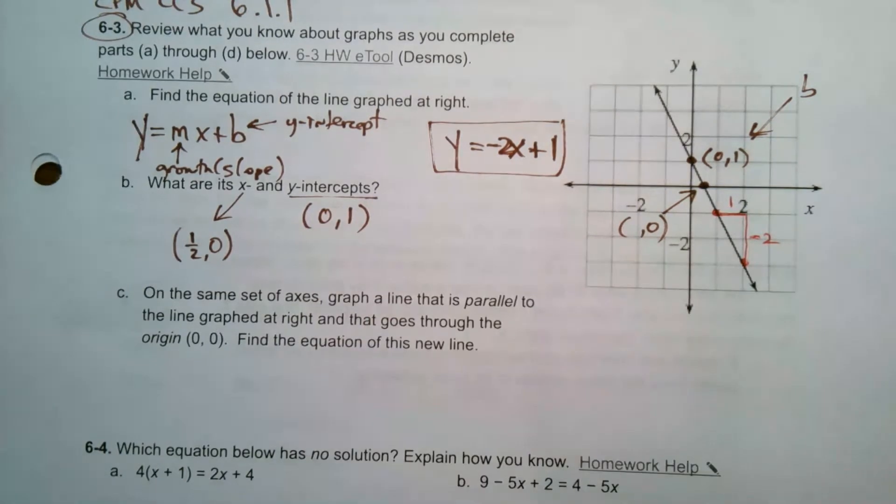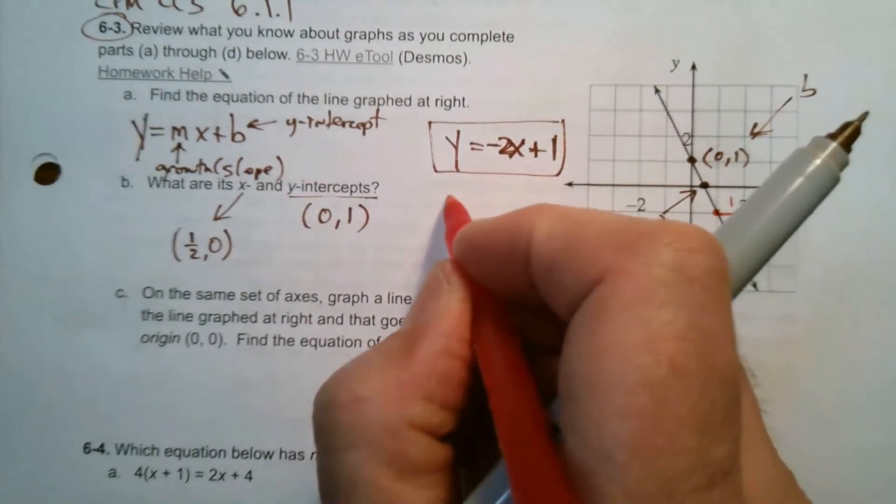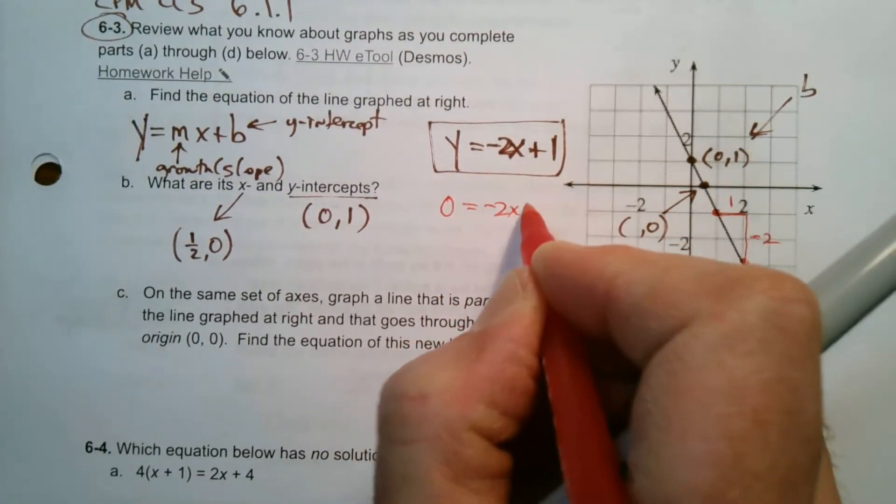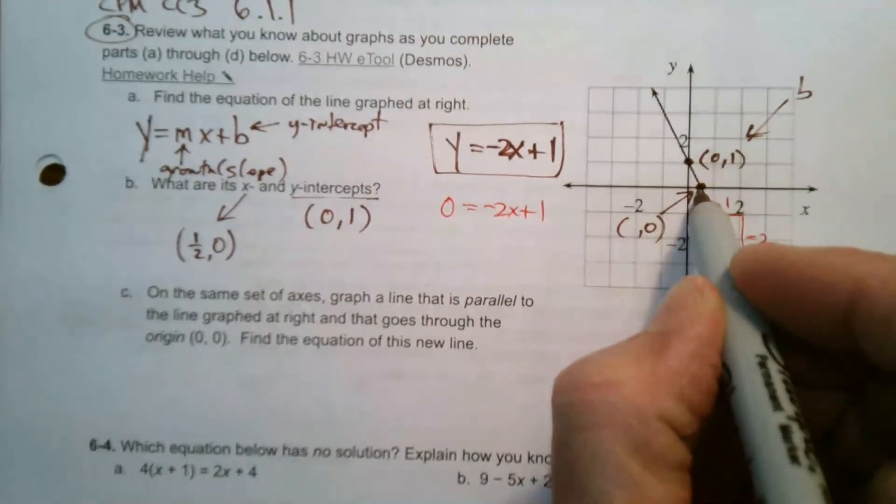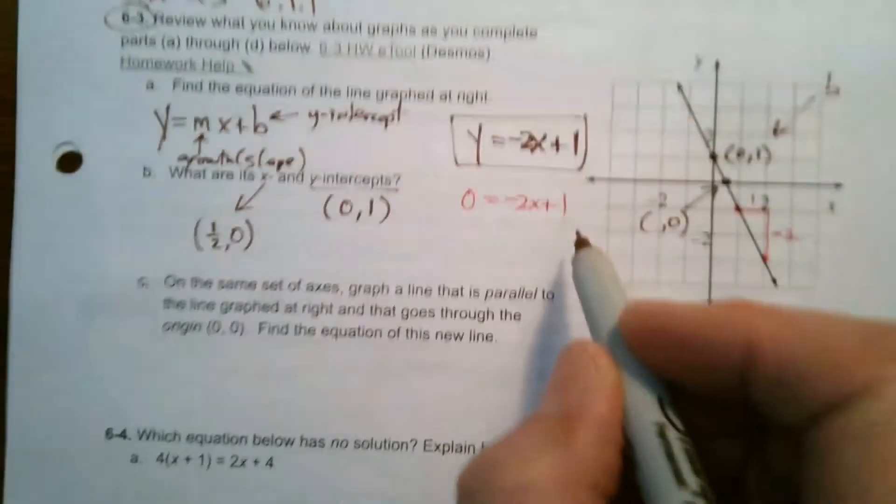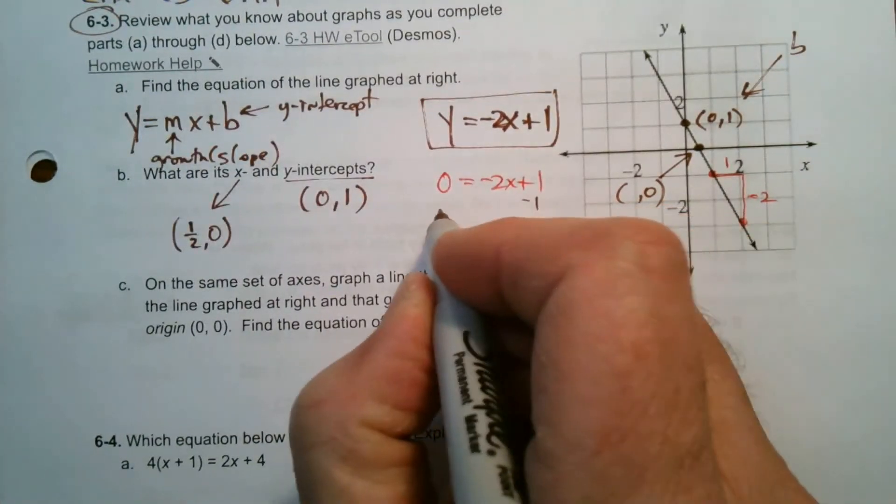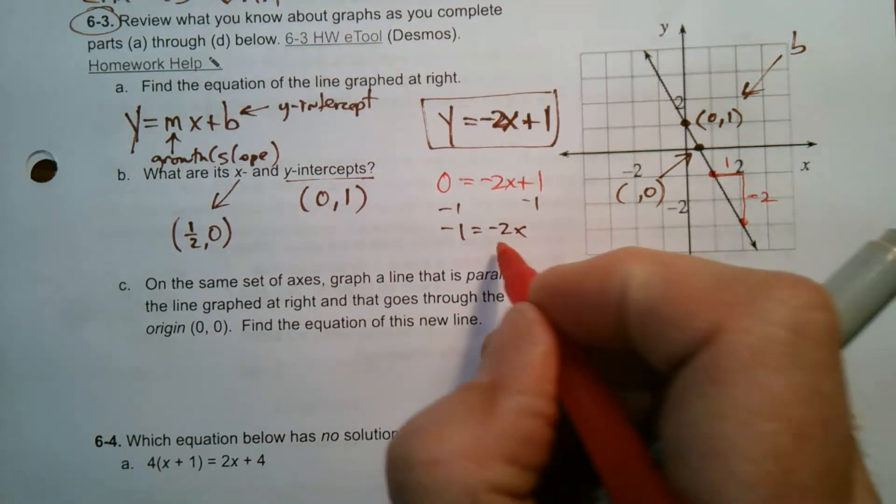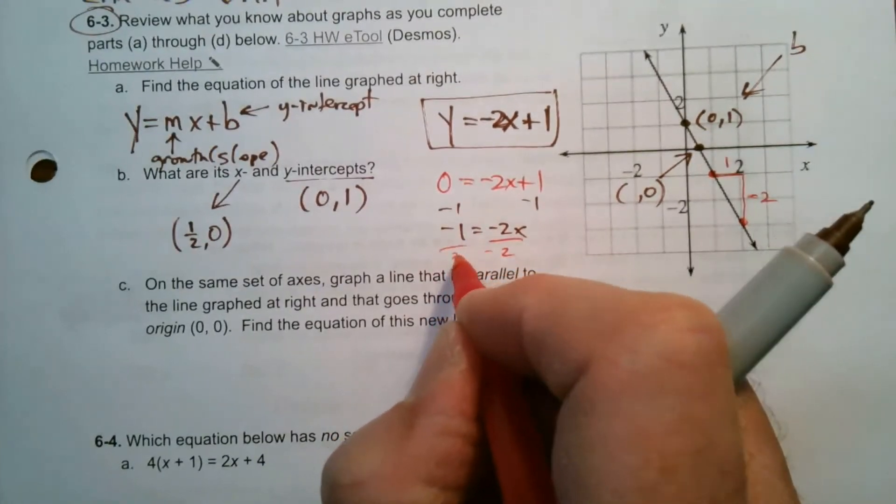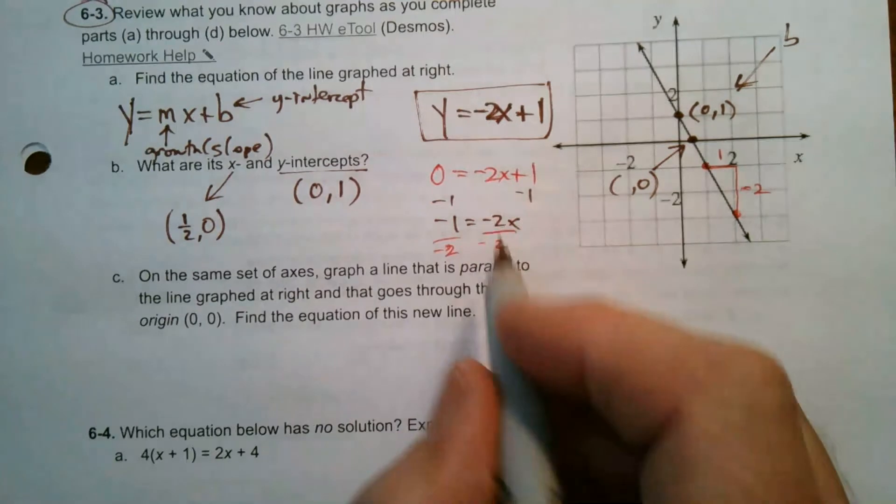So the other way to do it would have been plugging in 0 into the y and then solve for x. Because you know that the x-intercept is going to have a 0 for the y. So if I did that, notice what I have. I'd subtract 1 from both sides. I have negative 1 is equal to negative 2x. Then divide both sides by negative 2.